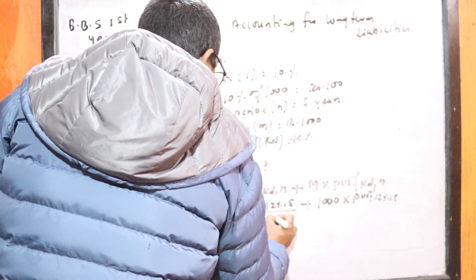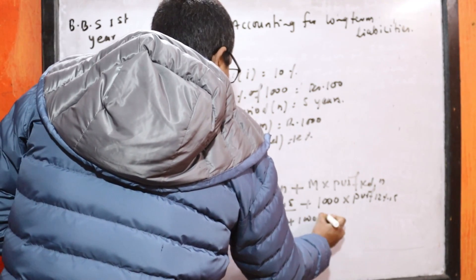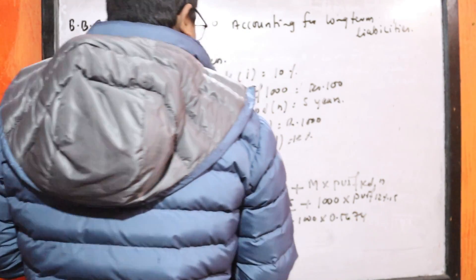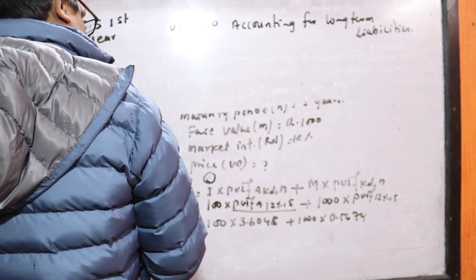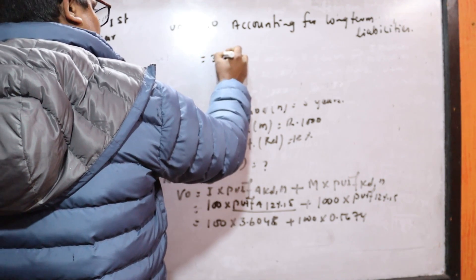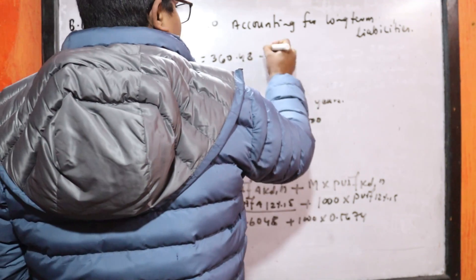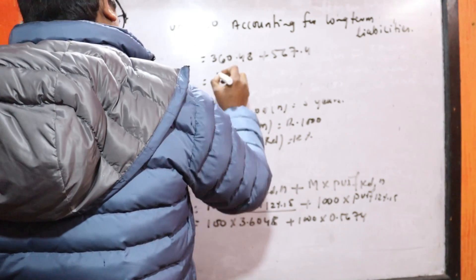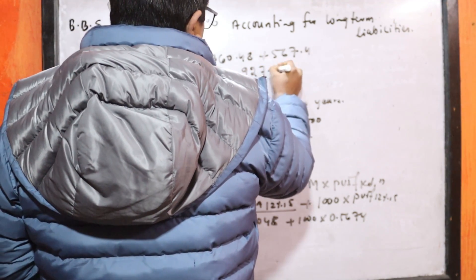The calculated value comes out to approximately 567.4 for one component and 927.8 overall, giving us the bond price B0.